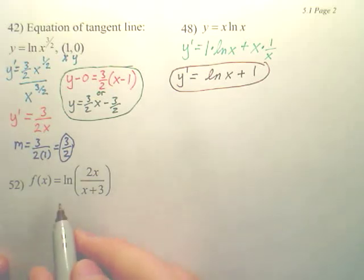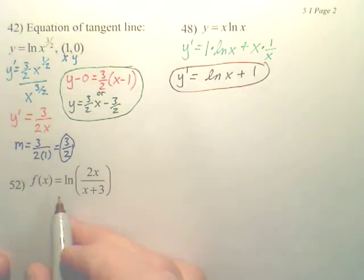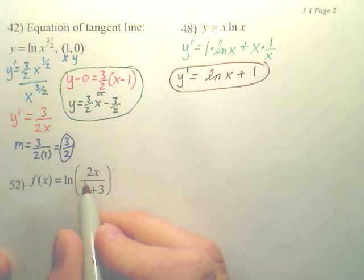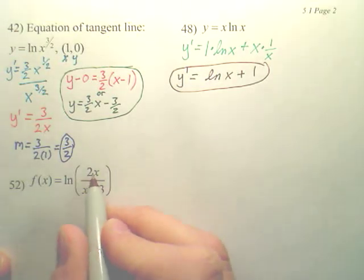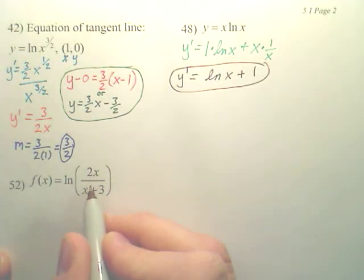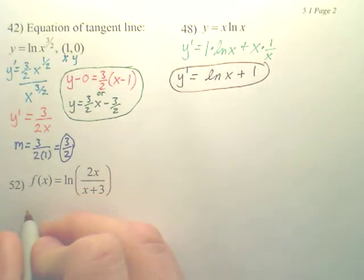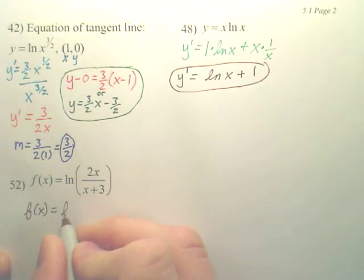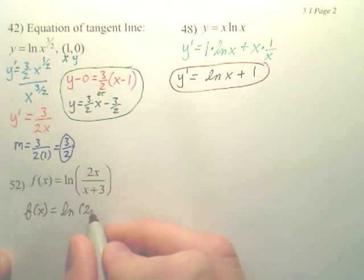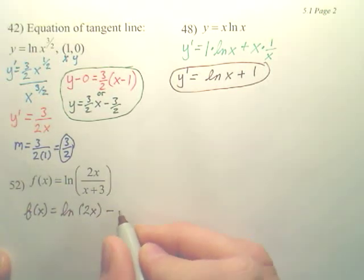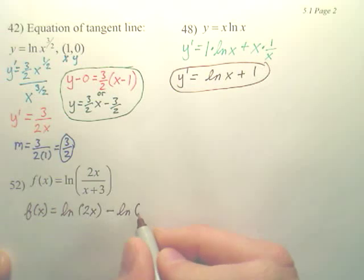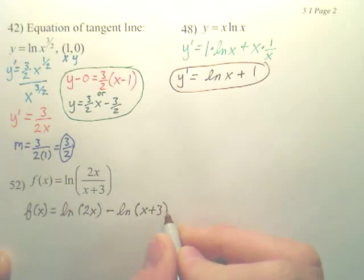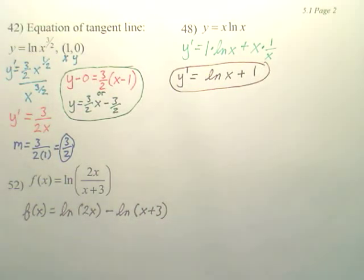And, number 52 here. In order to derive this, what you first want to do, because this is right here, you don't want to derive... Usually, it would be this prime, derive this, quotient rule, over this. But, I think it would be easier to rewrite it as follows. Using your properties of logs, you can do this. You can separate it or expand it. And, this will make it quite a bit easier of a problem.